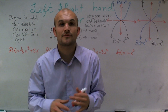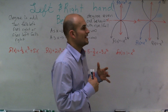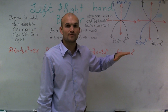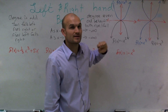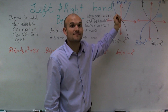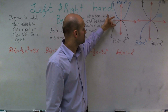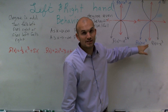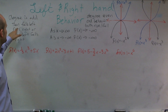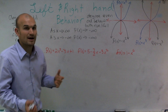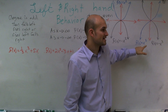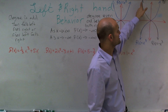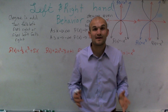Let's take a look at end behavior. Remember, our end behavior follows the same paths. When we have an even degree, the end behavior is either going to both rise or both fall, and that depends on whether the leading coefficient is positive or negative. If it's positive, both end behaviors rise; if the leading coefficient is negative, both fall. If my degree is odd, it either falls left and rises right, or rises left and falls right — determined by whether the leading coefficient is positive or negative respectively.